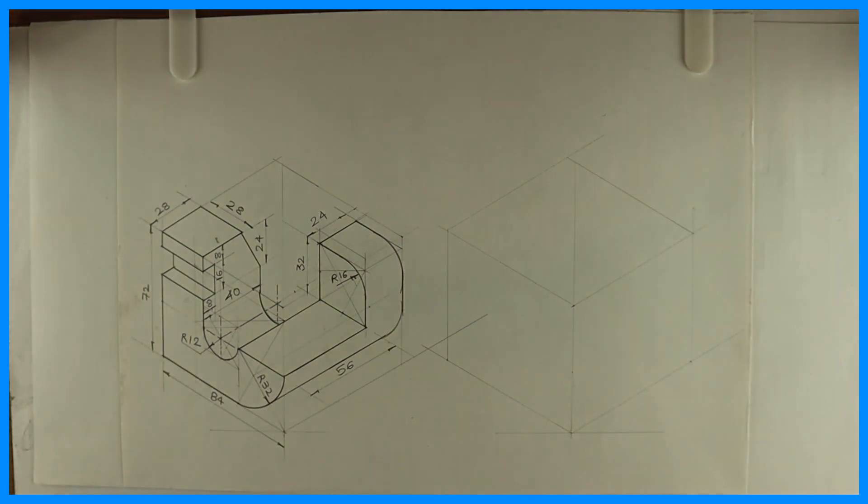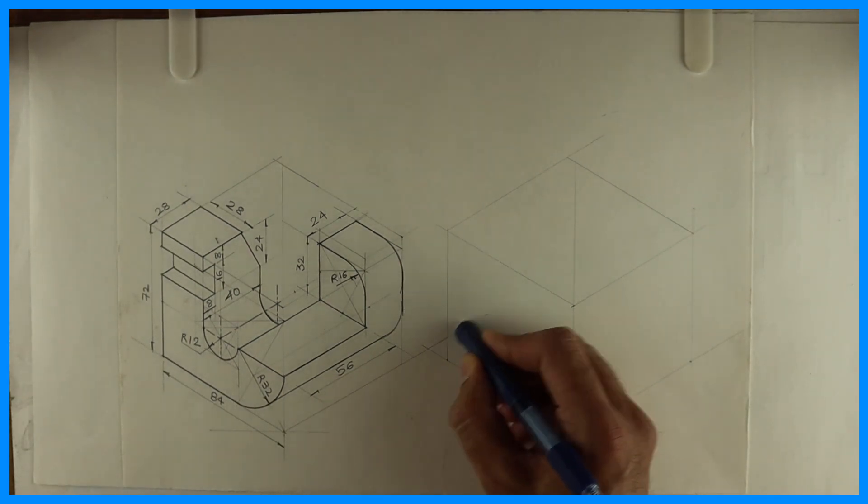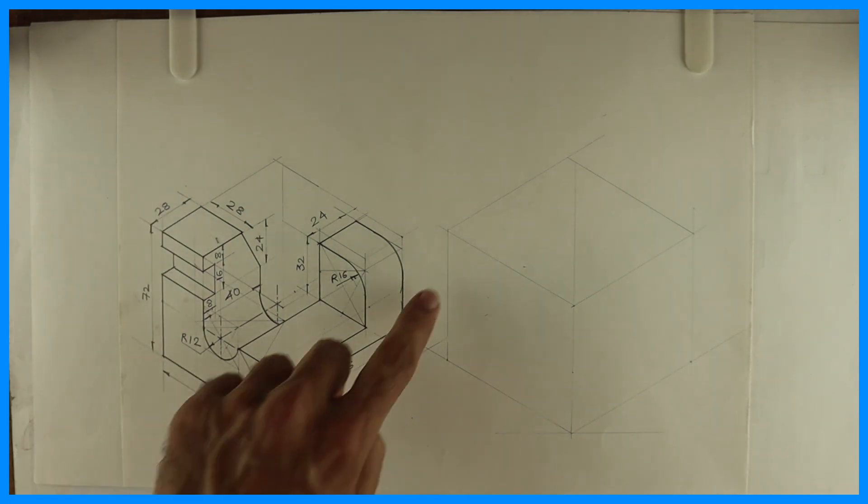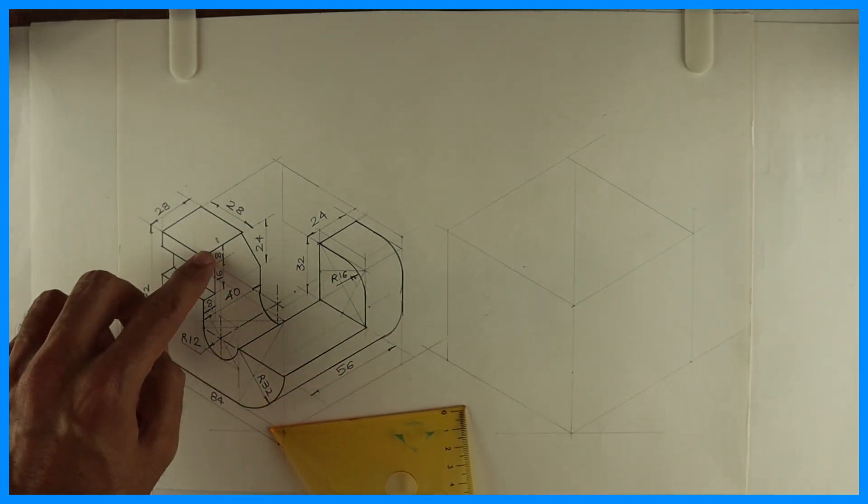After this box we'll see this side first. We'll erase this. This side, see this. So I'll draw that first.